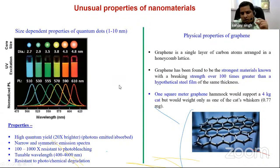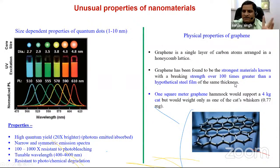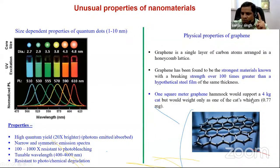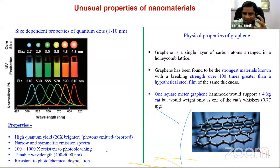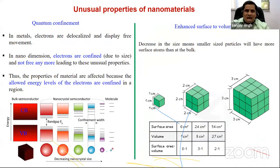Graphene is basically a single layer of carbon atoms arranged in a honeycomb lattice. It is the strongest material known — its breaking strength is over 100 times greater than a hypothetical steel film of the same thickness. One square meter of a graphene hammock can support a 4 kg cat, but it would only weigh as much as one of the cat's whiskers — about 0.77 mg. In the future, we can expect a lot of applications of graphene.